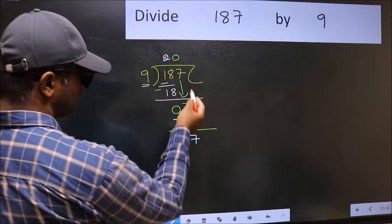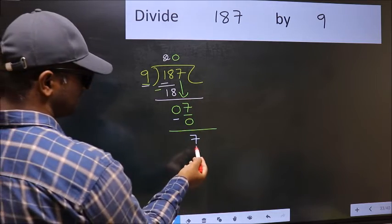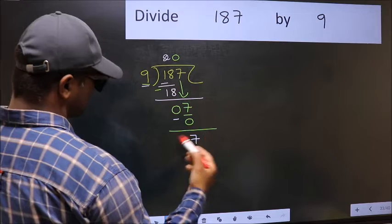Over here, we did not bring any number down. And 7 is smaller than 9. So,